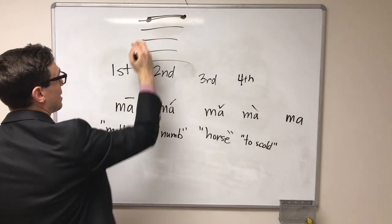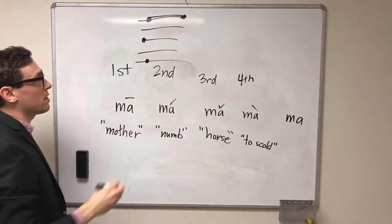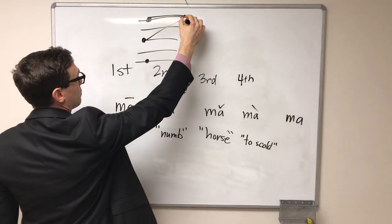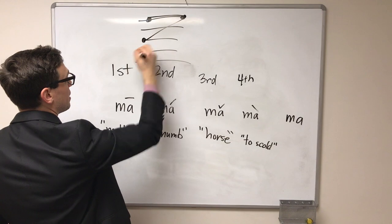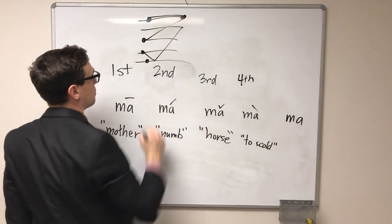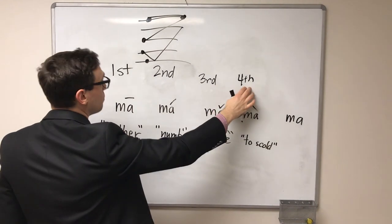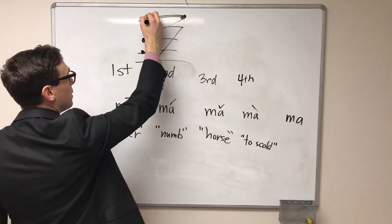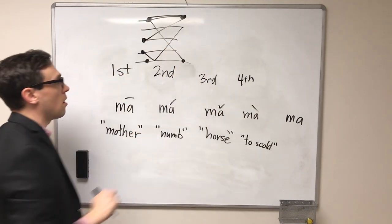You can think of your second tone as starting mid-register and rising. You can think of your third tone as starting relatively low, dipping before coming back up again. And our fourth tone starting high and going down all the way to the bottom.